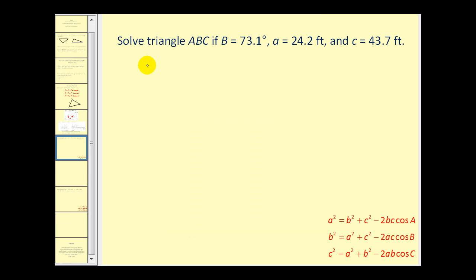Let's take a look at a couple problems. Again, it's not important this is to scale. What's important is we show the relationships properly. We know angle B is 73.1 degrees, A is 24.2 feet, and C is 43.7 feet.